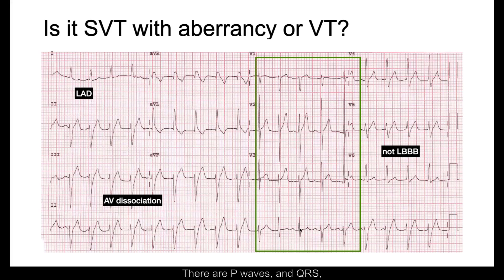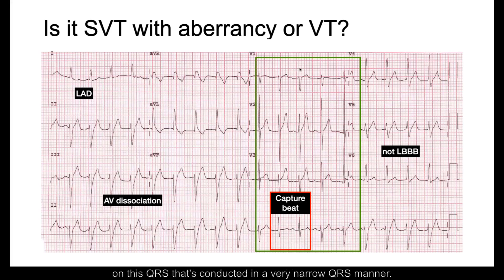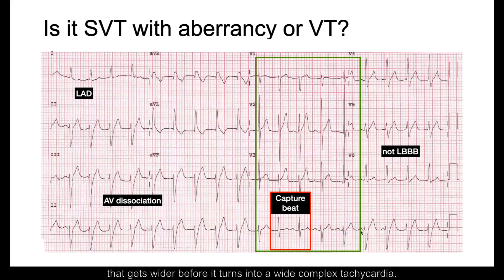Let us now focus on the transition zone. There are P waves and QRS complexes — some are very narrow, some are broad. You can identify actual capture beats with P waves seen on QRS complexes conducted in a very narrow manner. There are also P waves with a slightly wide QRS that gets wider before it turns to the wide complex tachycardia — these would be fusion beats.